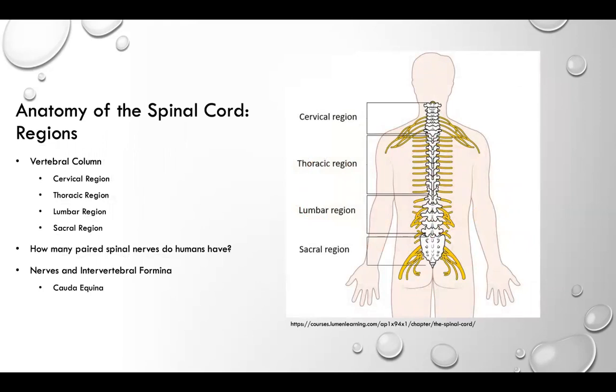On this slide, I will discuss the regions of the spinal cord. The length of the spinal cord is divided into regions that correspond to the vertebral column. The name of the region corresponds to the levels at which spinal nerves pass through the intervertebral foramina. The cervical region is found in the neck, the thoracic region is found in the thorax, the lumbar region is found in the lower back, and the sacral region is found in the pelvis.